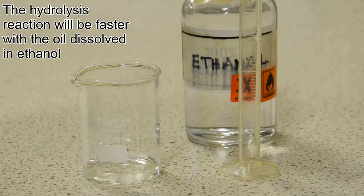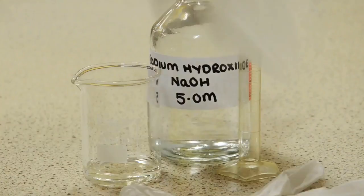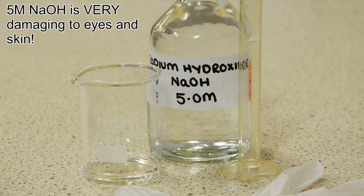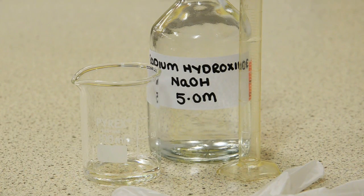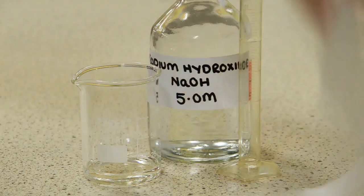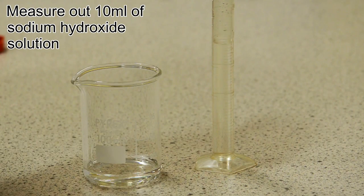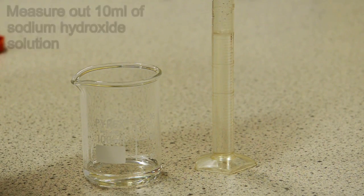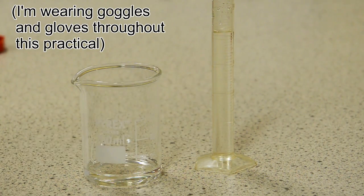Now I'm going to very carefully measure out 10 milliliters of sodium hydroxide solution. This is highly concentrated, it's five moles per decimeter cubed, five molar solution. We're using sodium hydroxide because soaps are the sodium salts formed when long chain fatty acids found in fats and oils react with sodium hydroxide.